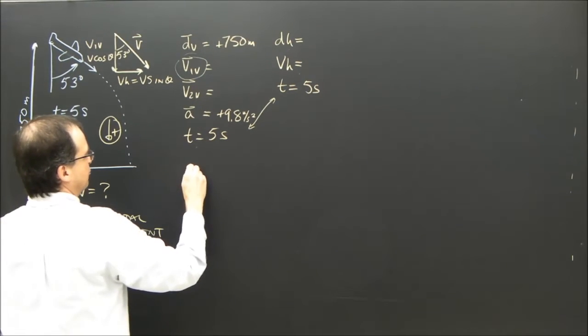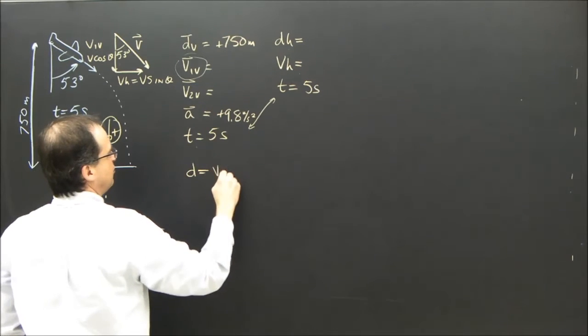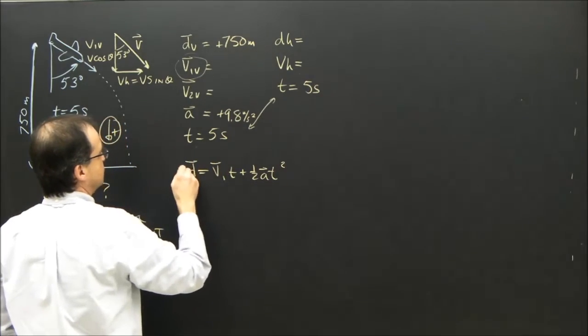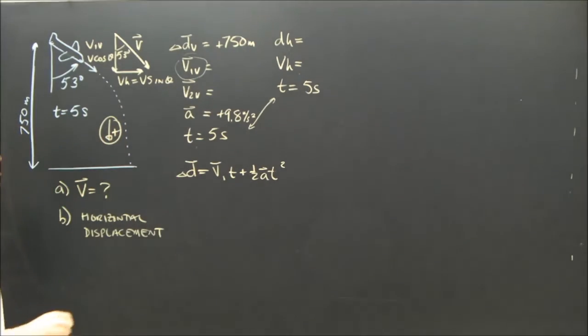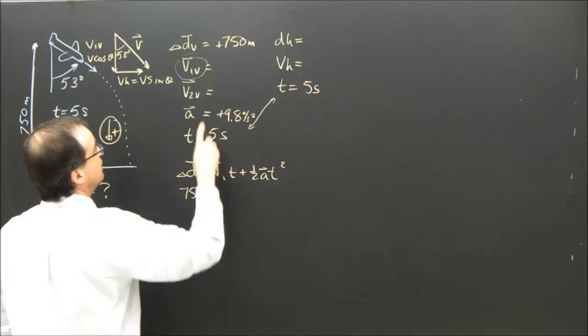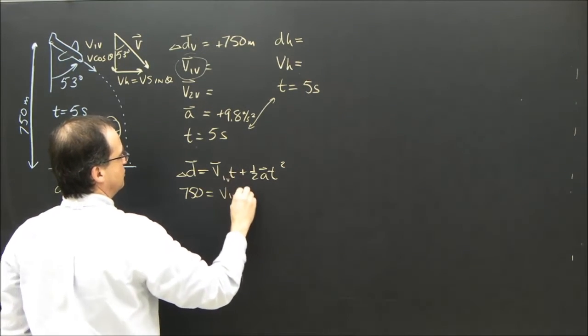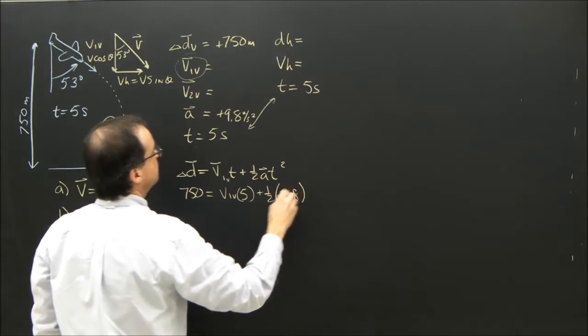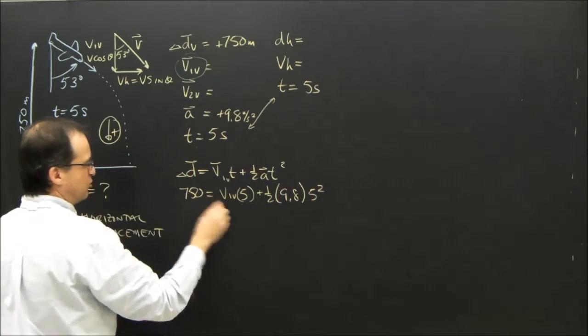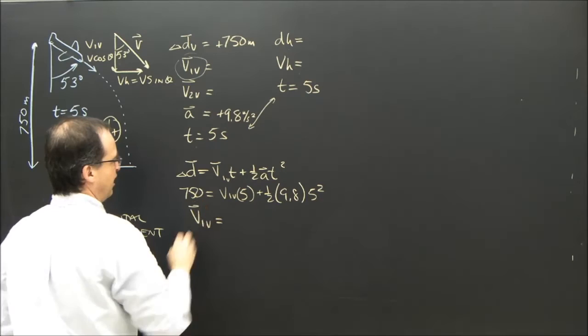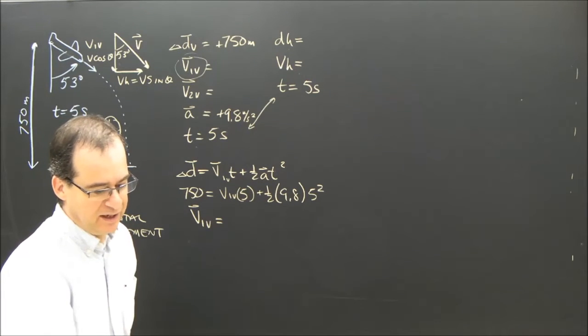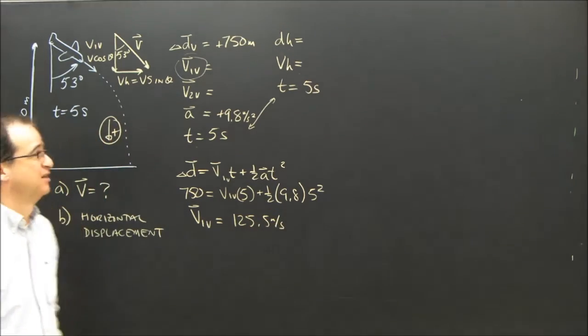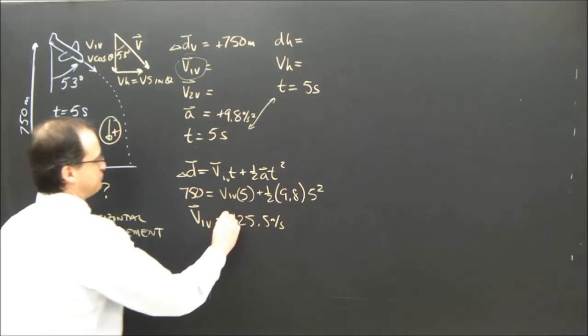Okay, DAT, and I'm looking for V1. I'm going to use delta D equals V1T plus one half AT squared. Okay, so let's plug in. 750 equals V1 vertical times 5 plus one half 9.8 times 5 squared. So you rearrange this, V1 vertical, and you get V1 vertical is 125.5 meters per second. And it's down, because it's positive.